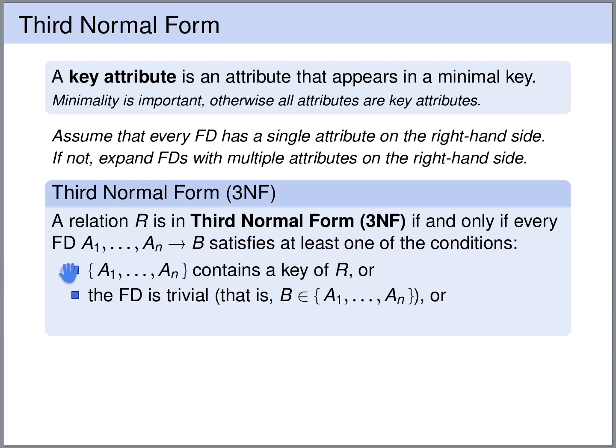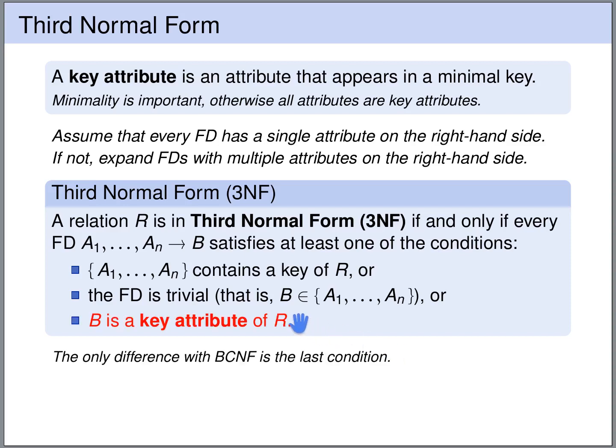Either the left-hand side contains a key of the relation, or the functional dependency is trivial, meaning that the right-hand side is a subset of the left-hand side. There is one more condition, and this condition distinguishes the third normal form from the Boyce-Codd normal form. Namely, it is also allowed that the right-hand side is a key attribute of the relation R. This condition, displayed in red, is the only difference with the Boyce-Codd normal form.